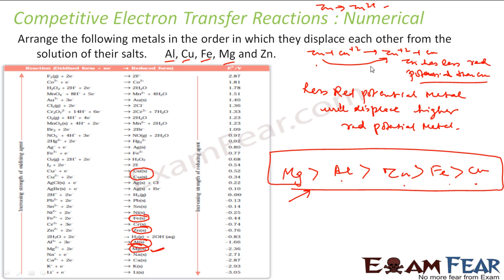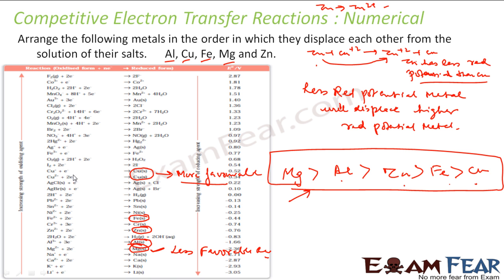Zn to Zn2+, or consider: Mg2+ to Mg has a lesser reduction potential value, and Cu2+ to Cu has a higher value. That means the copper reduction reaction is more favorable. So copper is easily displaced from its salt, while magnesium is difficult to displace — meaning magnesium will replace others from their salt.